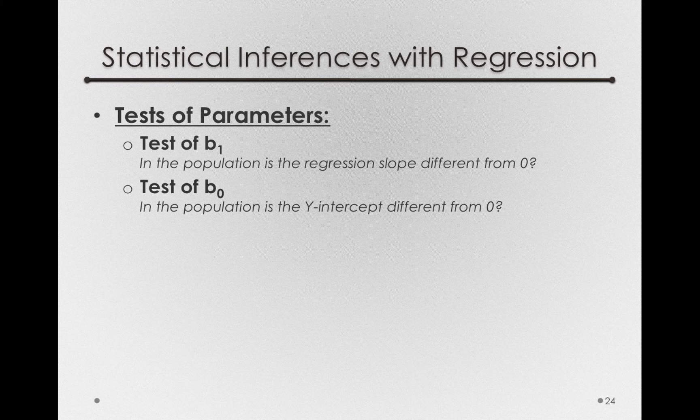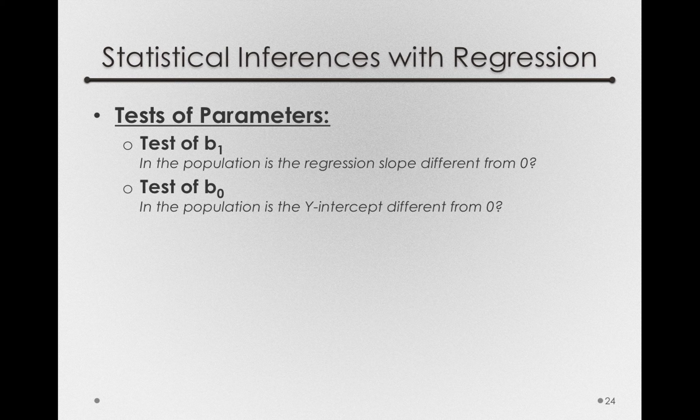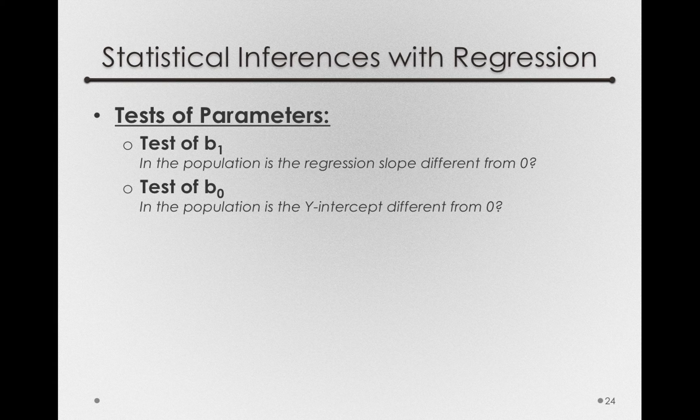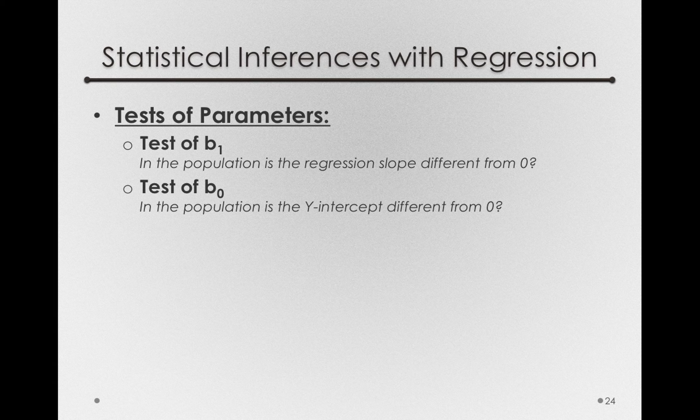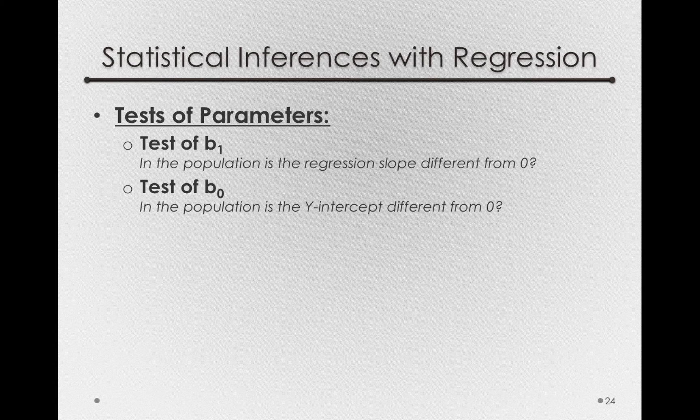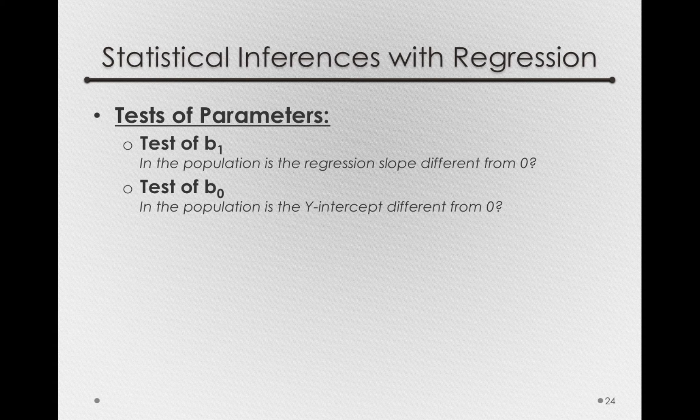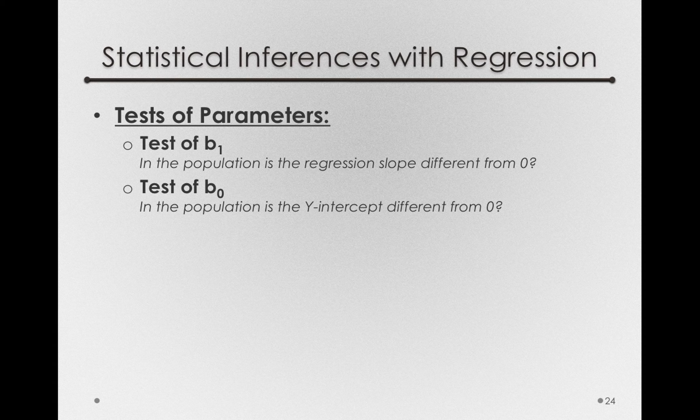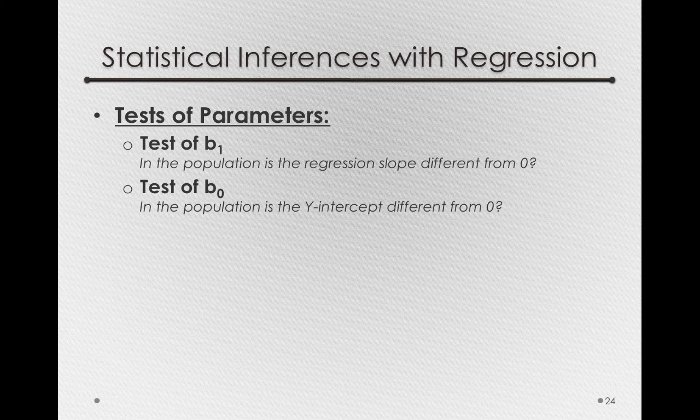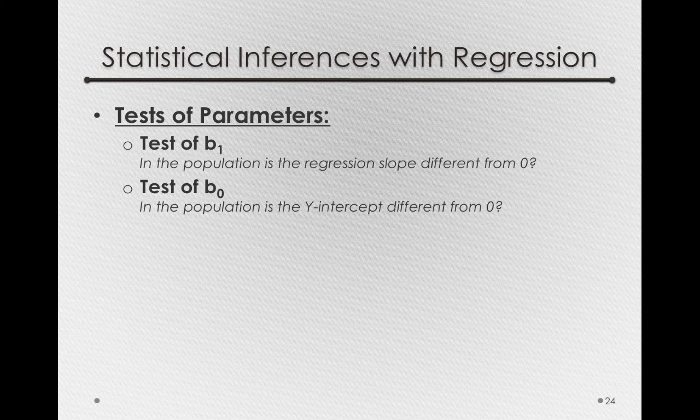In our previous example, this would be a test of if somebody studies zero hours, do we think they have a score different from zero? We can be pretty sure that somebody who studies zero hours probably will do different from zero in the population. But occasionally this is the test of interest, and we can form our test in much the same way as the test of B1.